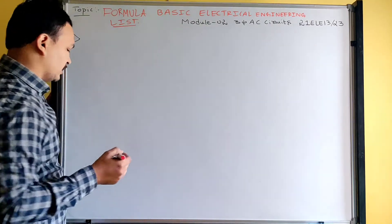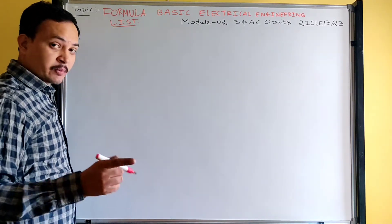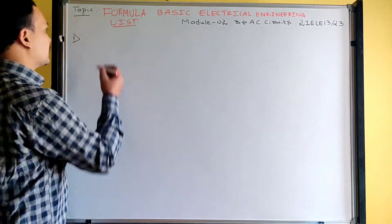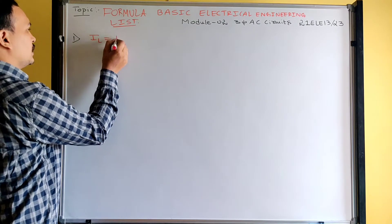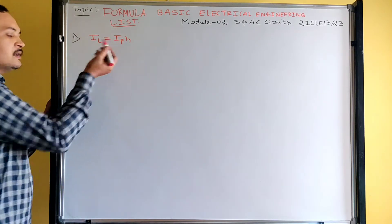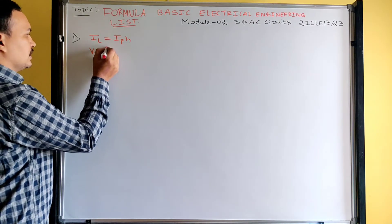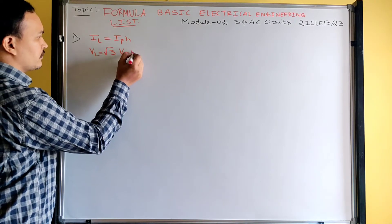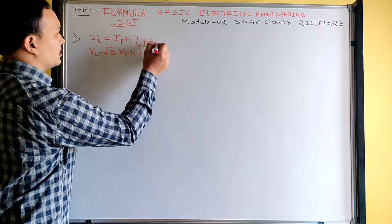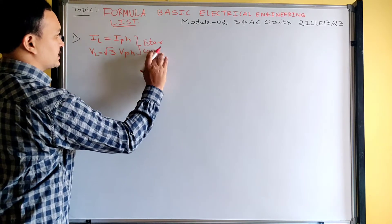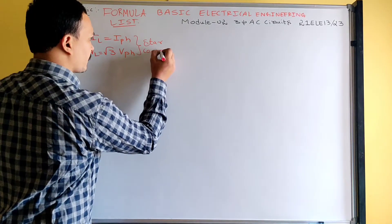Let me list out all the formulas. Consider three-phase AC circuits. First formula: the relation between line and phase quantities for both star as well as delta connection. In star connection, line current and phase current are equal, and line voltage is root 3 times of phase voltage. This is valid for star connection — if a question gives star connection, you must know these relations.